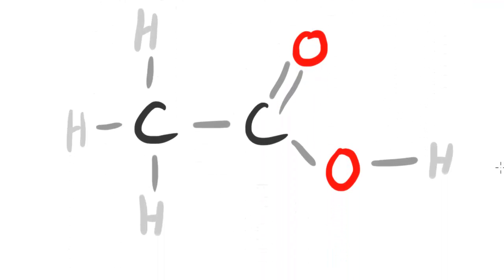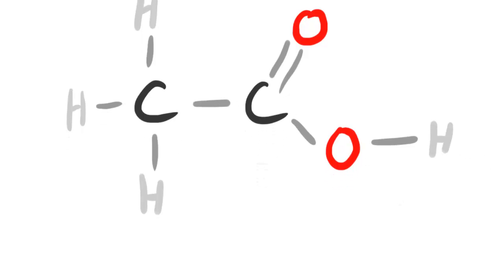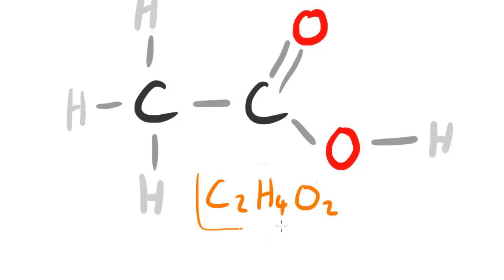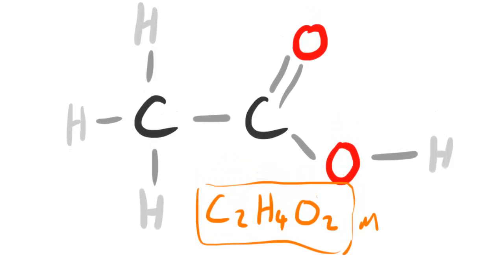Now let's move on to the next molecule — ethanoic acid — and let's find its formulas. This is the displayed formula. For the molecular formula we count up the number of atoms of each element. We have two carbons: C2. Counting the hydrogens: 1, 2, 3, 4 hydrogens. Then counting the oxygens: O2. So the molecular formula is C2H4O2, showing all the number of atoms of each element.